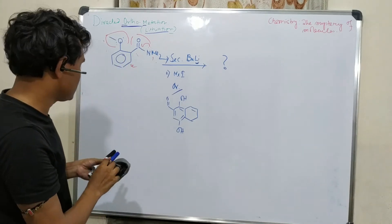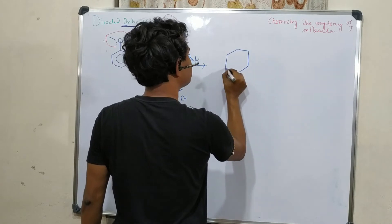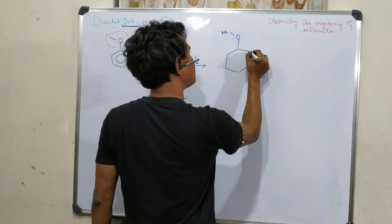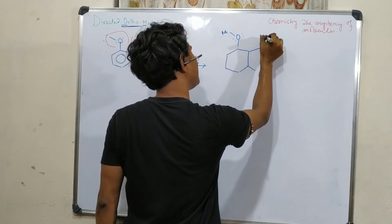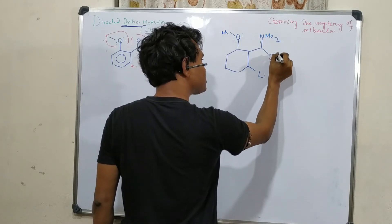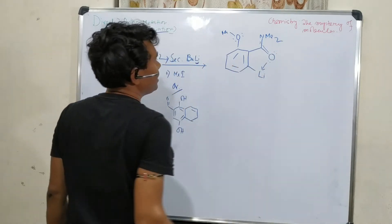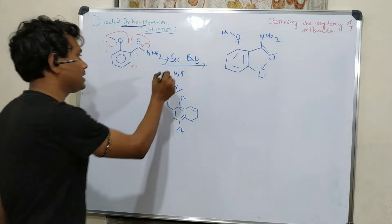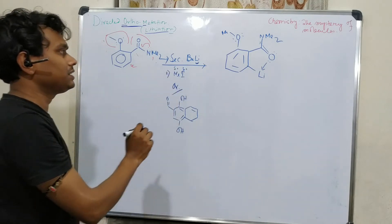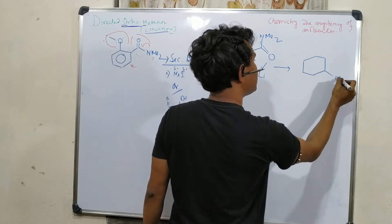The product will bear a lithium at the ortho position, with OMe and NMe₂ groups on the ring. I wrote it in this way because donation will happen from the oxygen side. The second step is methyl iodide: since the carbon bearing lithium is electron-rich (δ-) and methyl iodide is δ+, alkylation occurs and the methyl group is attached at that position.